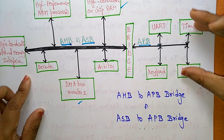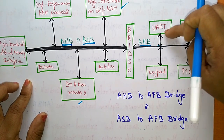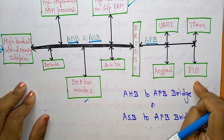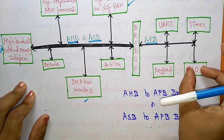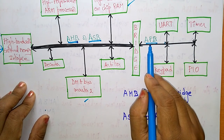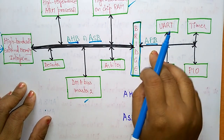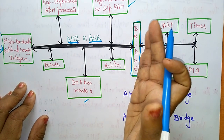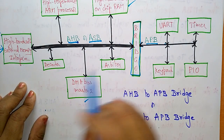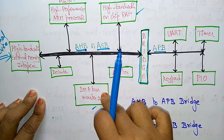If you want to connect external peripheral devices such as UART (Universal Asynchronous Receiver Transmitter), timer, keypad, and PIO (Programmable Interrupt/Input-Output), these external peripherals are connected to the APB — Advanced Peripheral Bus. That connection is made with the help of an internal bridge circuit. The bridge sends master devices to the high-performance bus.